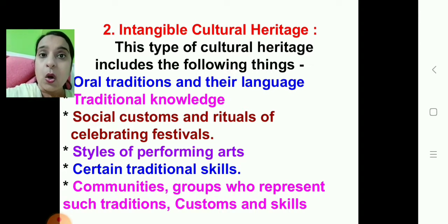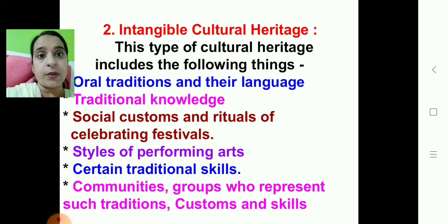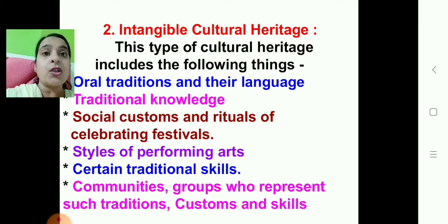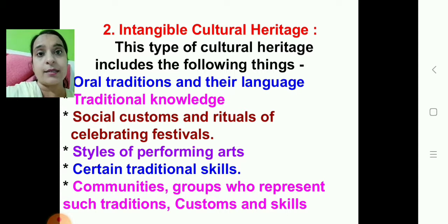Oral traditions include stories, songs, and povaras. These are examples of oral sources. Then there is our traditional knowledge — knowledge learnt from our ancestors or parents that is carried forward. There are also social customs and rituals of celebrating festivals. For example, in Baisakhi, the harvest festival, we offer it to God and follow customs our parents observe, transmitting this information from one generation to another.